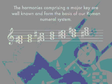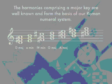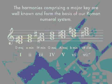The harmonies that comprise the major key are well known — we all have those memorized, and they are the actual basis of the Roman numeral system. Here we have a D major scale, and I've built the chords on each of the scale degrees: D major, E major, F sharp minor, G major, A major, B minor, and C sharp diminished. We attach Roman numerals — this is something we all have memorized and used for years.